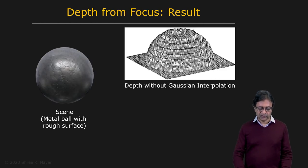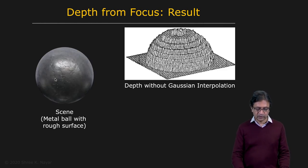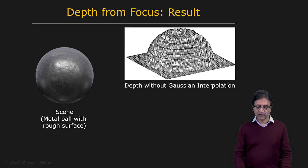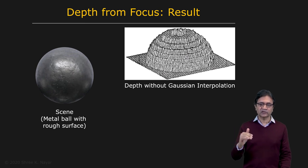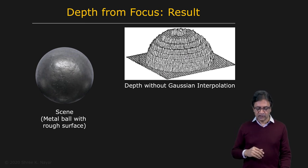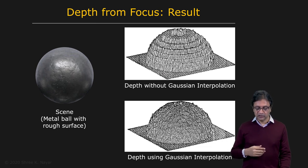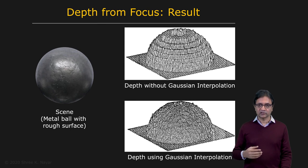Looking at the same metallic ball example as before: without interpolation we had discrete depth values corresponding to N sensor locations, giving a stepped depth map. After applying Gaussian interpolation, we get a very nice, smooth reconstruction of the object.